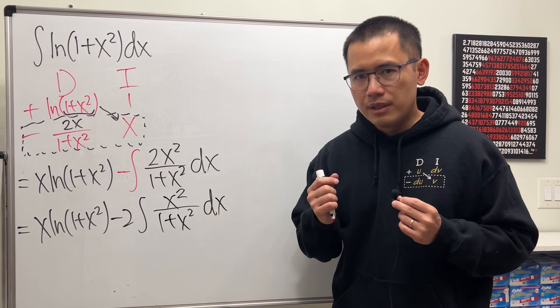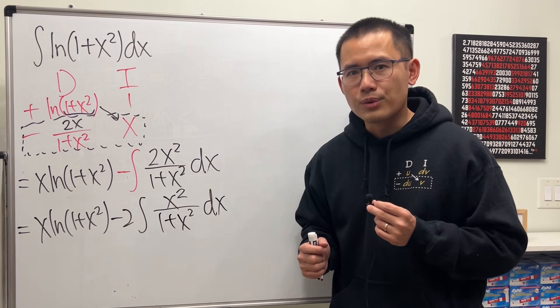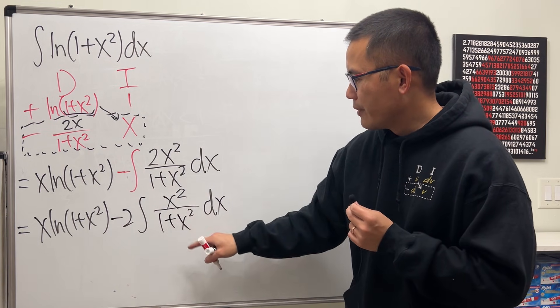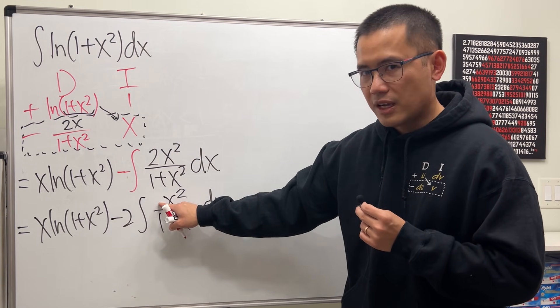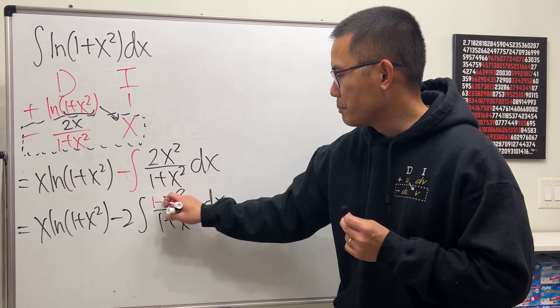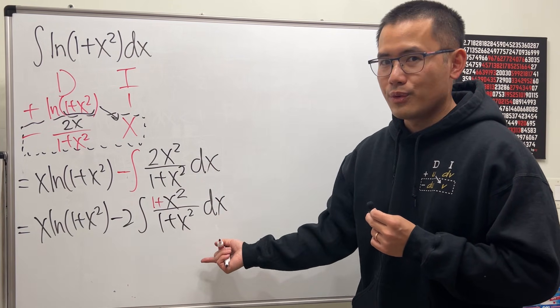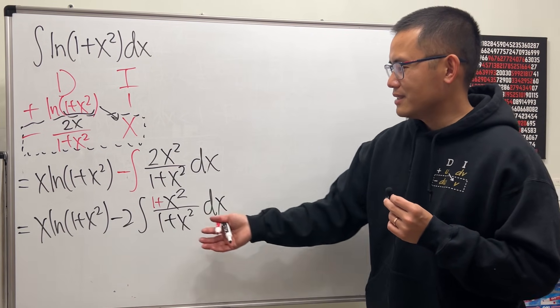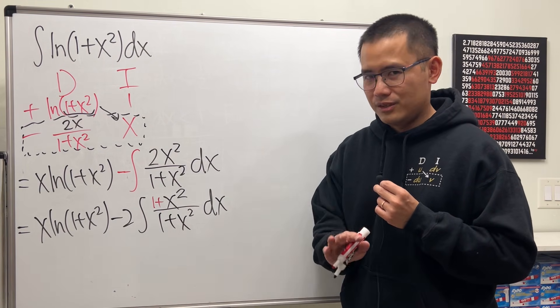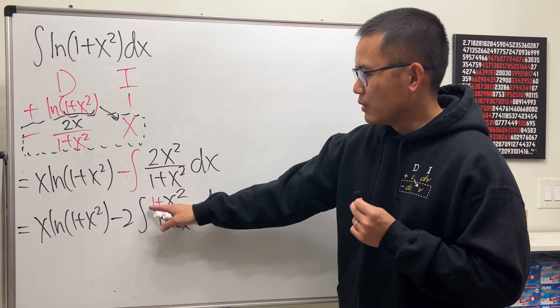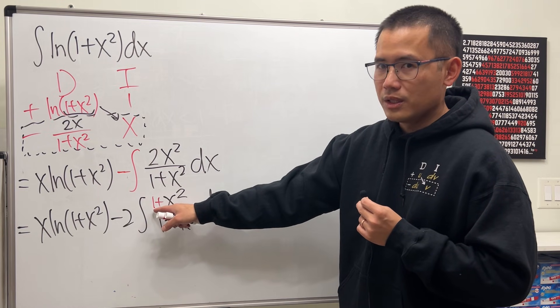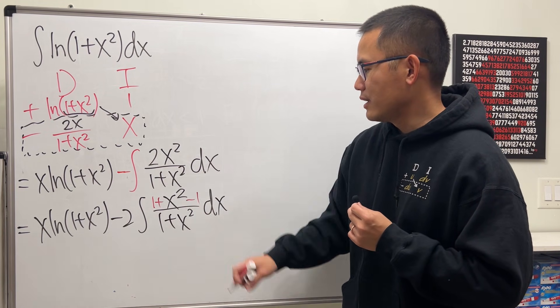Let's talk about how we can make good things happen in integral. Wouldn't it be nice if the top, we also have the 1 plus x squared? Sure thing, because that way it'd just be 1. But I cannot do that because otherwise I change the whole thing. It's okay. I put down the 1 plus, that's a positive 1. Just go ahead and minus the 1 at the end.